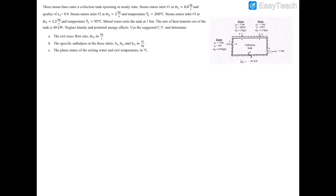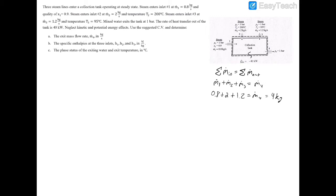For part A, we apply the law of conservation of mass, which states that the sum of mass flowing into the system must equal the sum of mass exiting. So m-dot-1 plus m-dot-2 plus m-dot-3 must equal m-dot-4. Plugging in: 0.8 plus 2 plus 1.2 equals m-dot-4, which comes out to 4 kilograms per second.